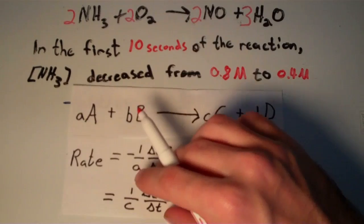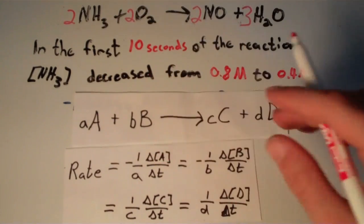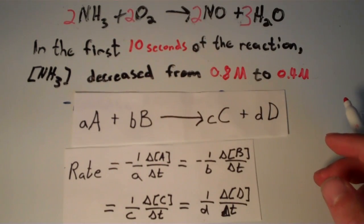The coefficients are 2, 2, 2, and 3. And by the way, if you need a video on balancing chemical equations, I have a couple of them.